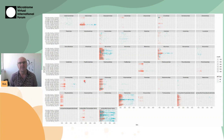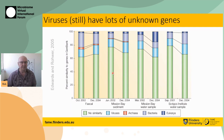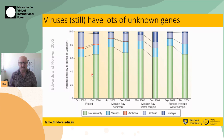One of the problems we have is that we're working with viruses and still there's so much we don't know about them. This is a graph we made in 2005 — nearly 20 years ago — with fecal samples and water and sediment samples from San Diego, California. The green bar shows how much of our samples were completely unknown, and 20 years ago about 60 to 70 percent of our viral samples had no similarity to anything in the database. Well, in those 20 years we've done a lot of sequencing and our databases have grown many times over — so surely now we must be better.